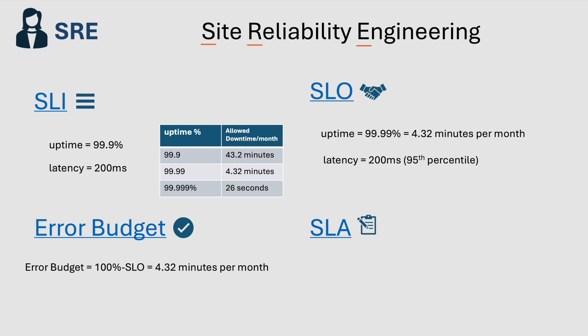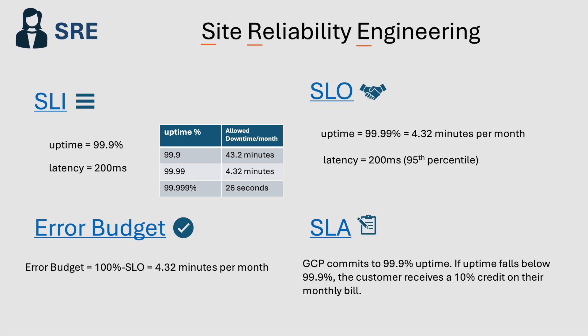Finally, SLA or Service Level Agreement is a contractual agreement between a service provider like GCP and the customer. It defines the minimum performance levels in the form of SLOs and the consequences if these standards are not met. Generally, SLA specifies the compensation if the provider fails to meet the promised level. For example, if GCP commits to 99.9% uptime and uptime falls below that, the customer receives a 10% credit on their monthly bill.